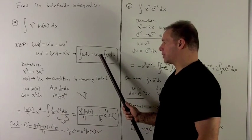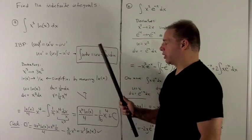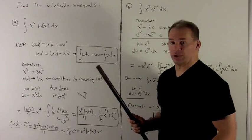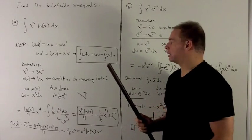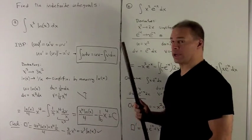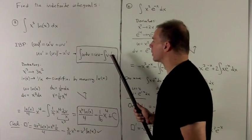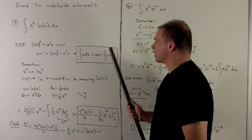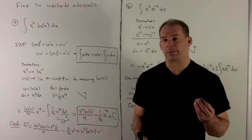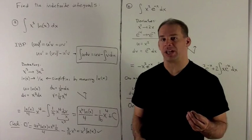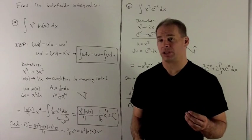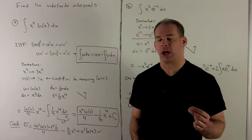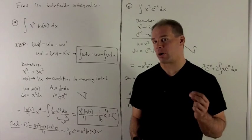In the second term, this happens because if I take the integral of a derivative, that just gives me back the original function, up to a constant. This is integration by parts — where integration by substitution undoes the chain rule, integration by parts undoes the product rule.